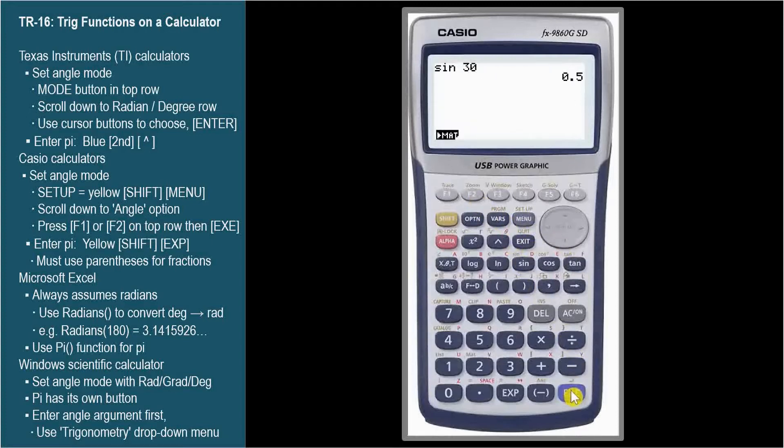We'll need it in a second, so let's note that pi is in yellow above the EXP button. So to enter pi, we'll press the yellow Shift button, then the EXP button.